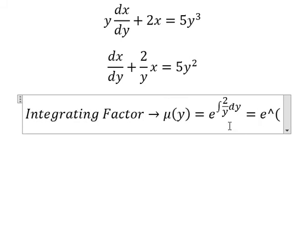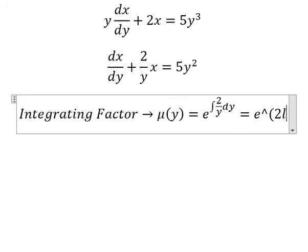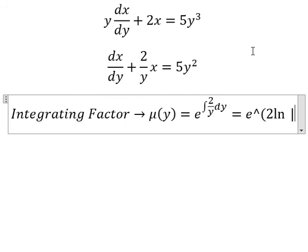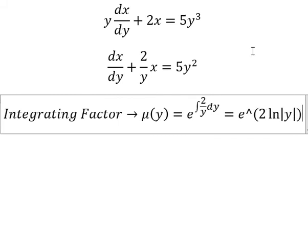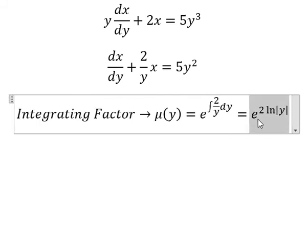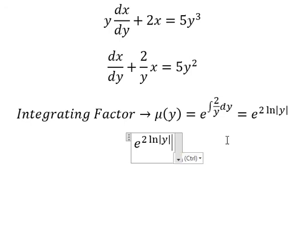The integral of this one, you got 2 ln of the absolute value of y. And then the number 2 goes inside the natural log in here. And this one, if we simplify, you got y squared because everything in here is a positive number.